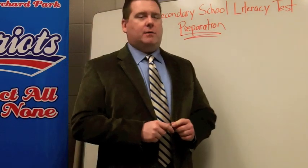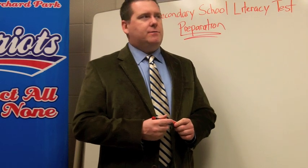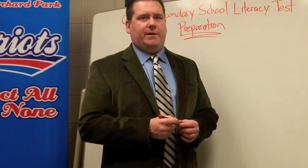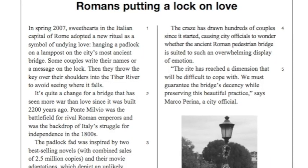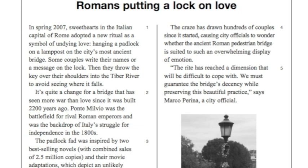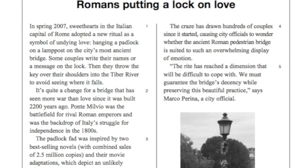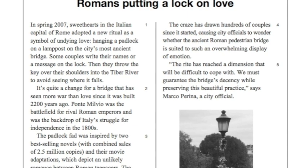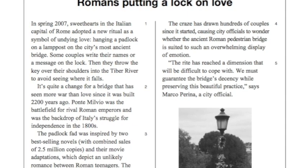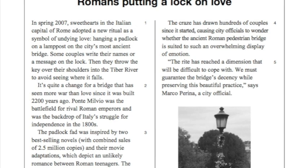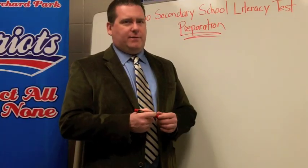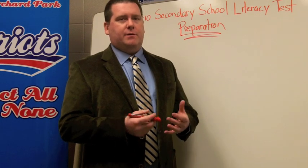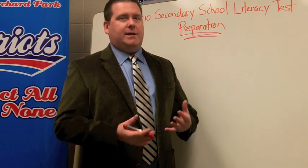One of the things you'll normally be expected to do on the literacy test is to read a selection and then answer a question using supporting detail taken directly from the text. In this news story you're going to be asked to answer whether or not city officials should be concerned over people putting locks on the bridge and throwing the keys into the river. Many times students are unsuccessful on the literacy test because their answers are too short and too lacking in detail and explanation.